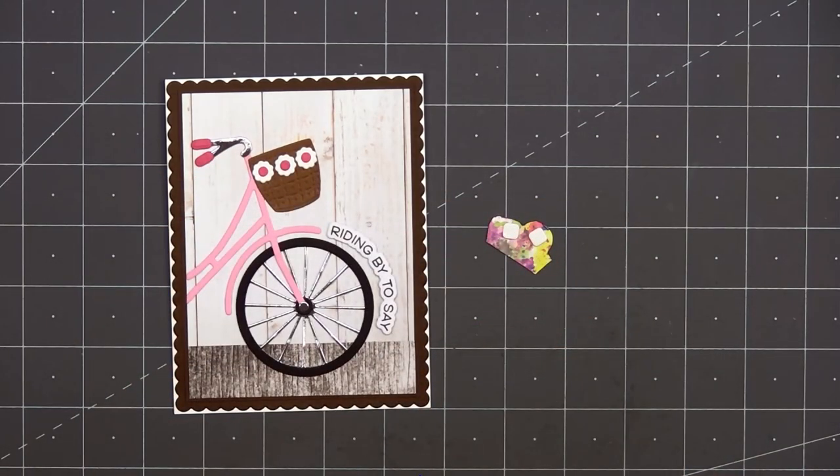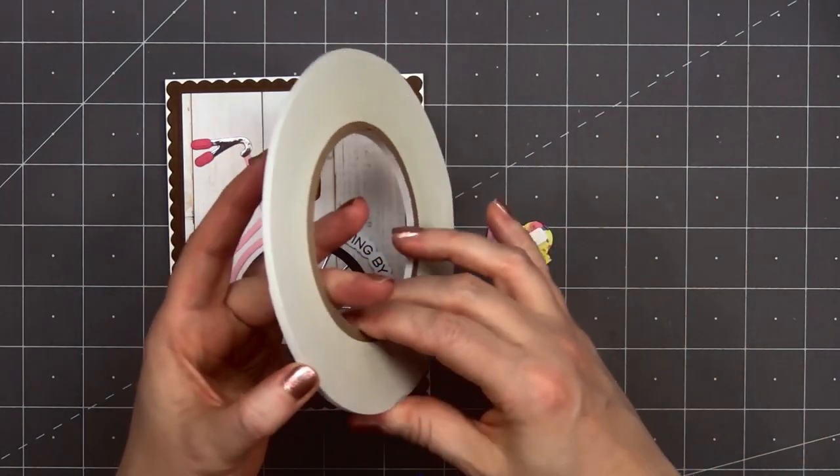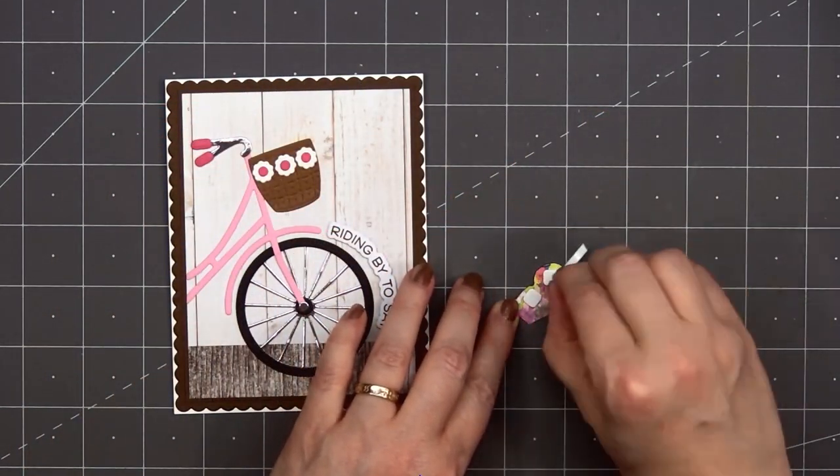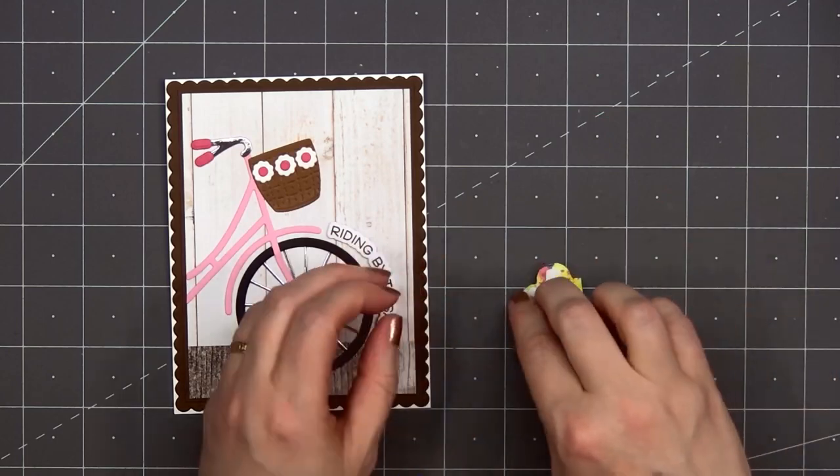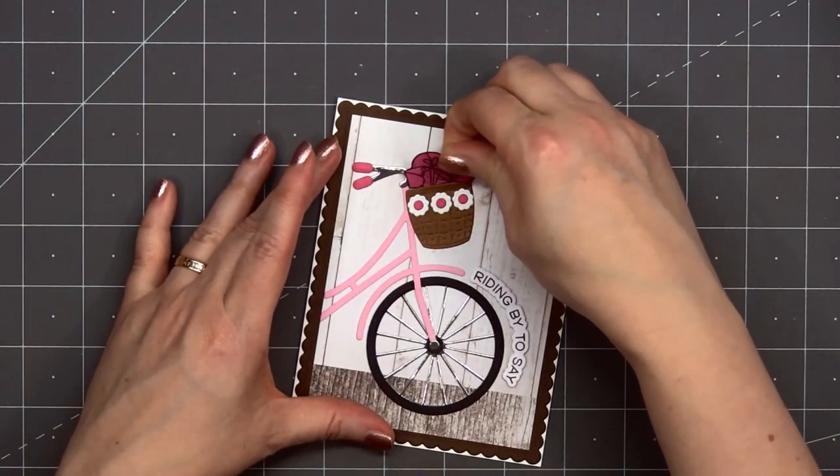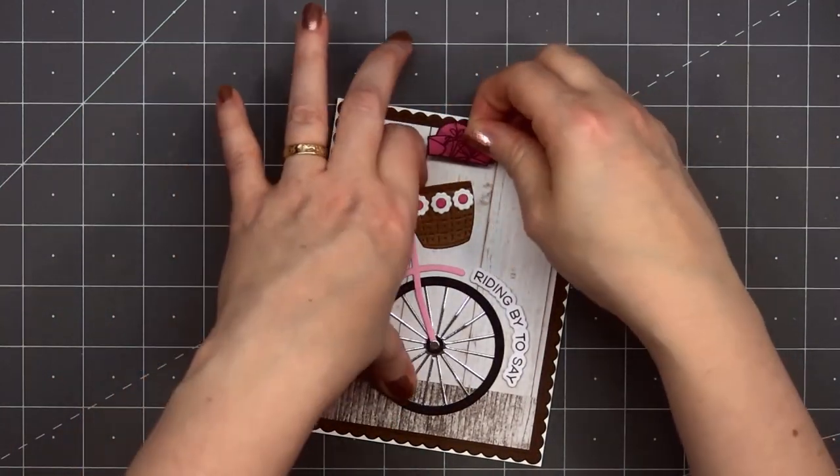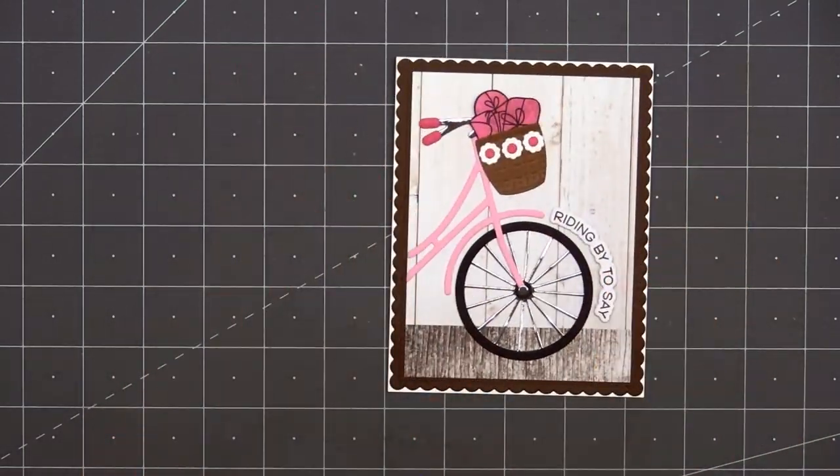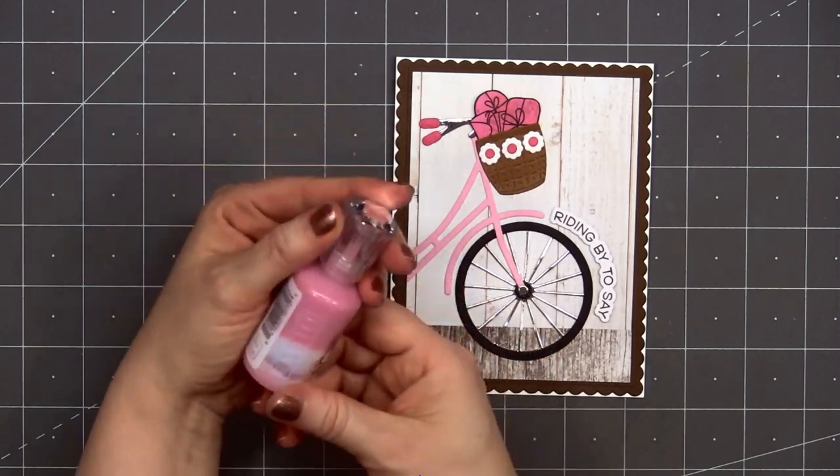I'll add some foam dimension on the very top of that image and some double-sided tape on the bottom. Then I'll tuck it inside the bicycle's basket. When I glued the basket onto the card, I made sure not to put the glue all the way to the very edge of the basket. That way there was enough room to tuck in my little present image.